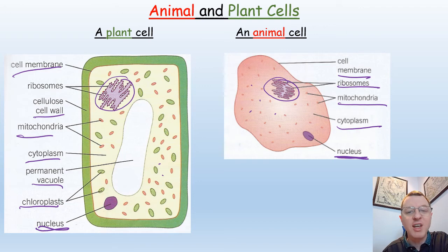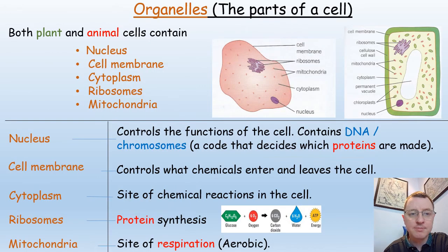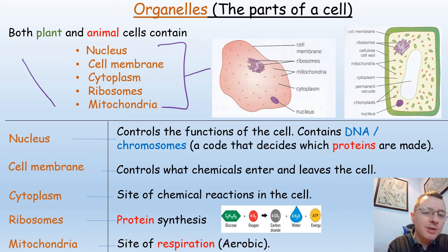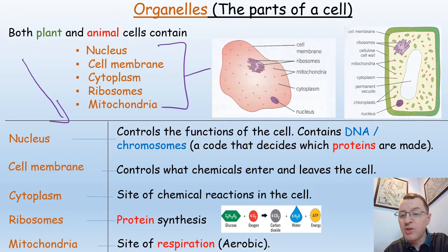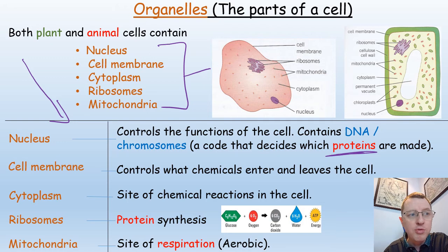What is the function of each of those parts? The nucleus controls the functions of the cell and contains DNA in the form of chromosomes. A short section of that DNA is called a gene — a code to decide which proteins are made. Some of those proteins will be enzymes which control the chemical reactions happening in the cytoplasm, controlling what gets made by the cell and what the cell does. The cell membrane controls the substances that enter and leave the cell.